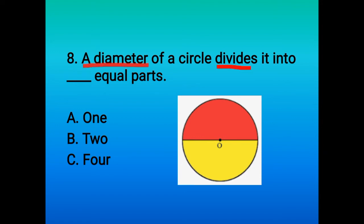Question 8: diameter of a circle divides it into dash equal parts. Children, this distance is the diameter, and you can clearly see that it divides the circle into two equal parts. So here option B is the correct option.